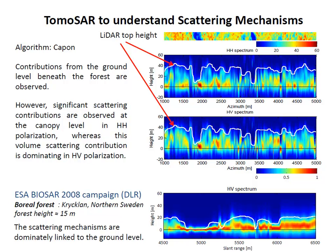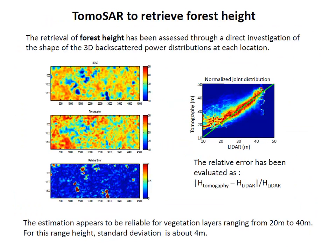The LIDAR data shown in white sits between the red and green profiles in the tomogram. By examining the shape of the tomogram, we can directly derive the forest top height by studying the three-dimensional backscatter profile and its location.